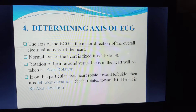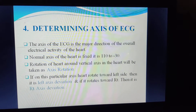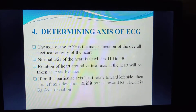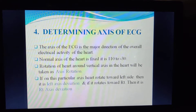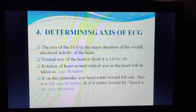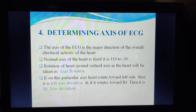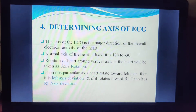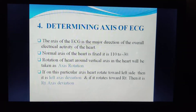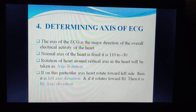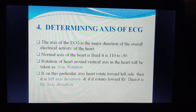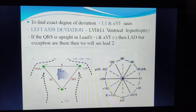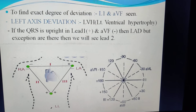The axis of ECG is the major direction of the overall electrical activity of the heart. The SA node and AV node produce electrical activity which propagates in all directions — right, left, upward, and downward. The normal axis of the heart is from -30 to +90 degrees. Rotation of the heart around the vertical axis toward the left side is left axis deviation, as seen in left ventricle hypertrophy; toward the right side is right axis deviation. To determine the exact degree of deviation, we focus on leads L1 and AVF.